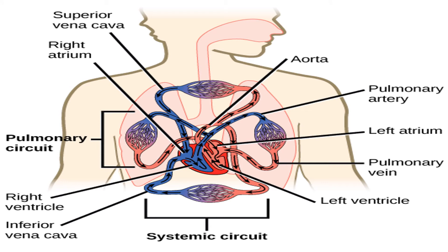Arteries carry blood away from the heart. All arteries carry oxygenated blood, with the exception of the pulmonary artery. Arteries have a thick elastic arterial wall that can withstand the pressure of blood flowing away from the heart.